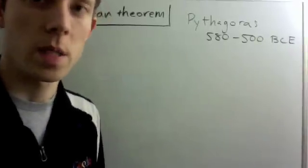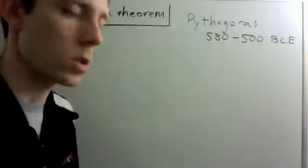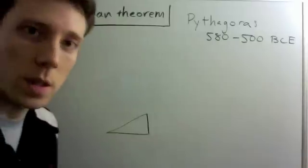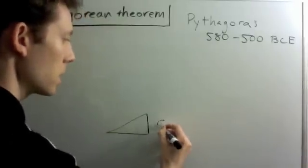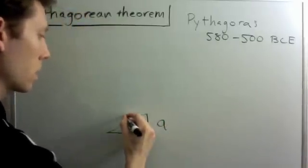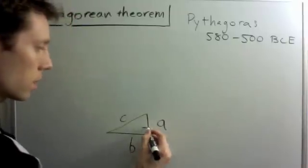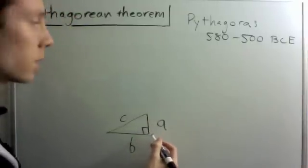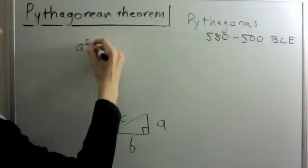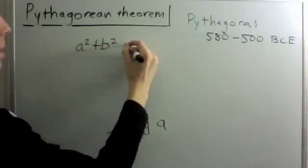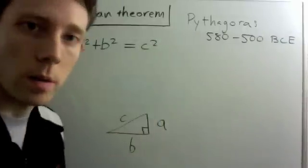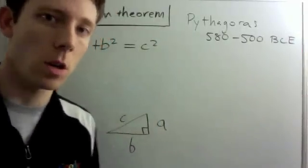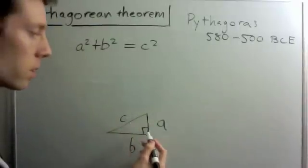The Pythagorean Theorem says that if I have a right triangle with sides of lengths a, b, and c, this angle here has to be a 90 degree angle — a right angle — then a squared plus b squared is equal to c squared. It's important that c is the length of the side across from the right angle.